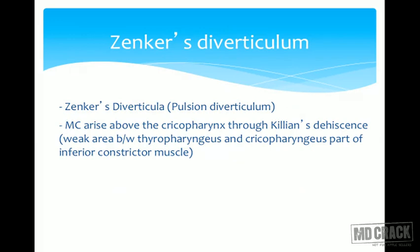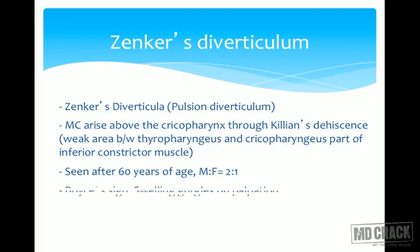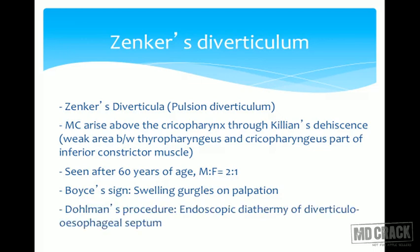Zenker's diverticulum, or pulsion diverticulum, most commonly arises from the cricopharynx through Killian's dehiscence — a weak area between the thyropharyngeus and cricopharyngeus parts of the inferior constrictor muscle. It is seen after age 60 and is almost twice as common in males. The boys sign is swelling that gurgles on palpation. The surgical procedure used is Dohlman's procedure — endoscopic diathermy of the diverticuloesophageal septum.